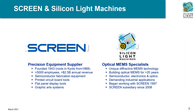Silicon Light Machines is a wholly owned subsidiary of Screen Holdings, who utilize our technology for their state-of-the-art precision equipment in the silicon processing and graphic arts industries. Silicon Light Machines also supplies optical modulators and solutions to numerous customers from many different applications, and we are always happy to work with new partners.